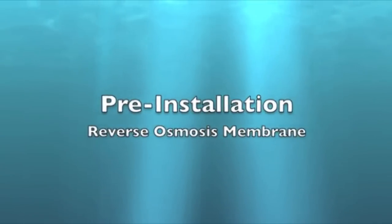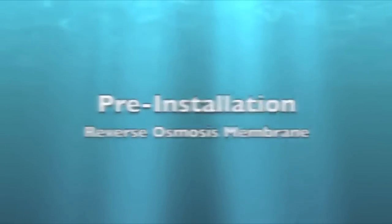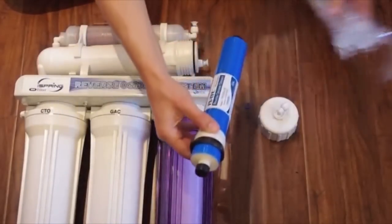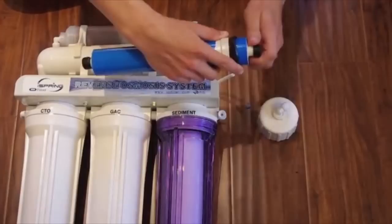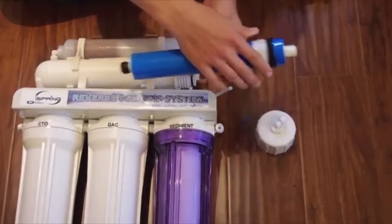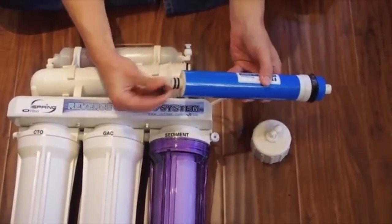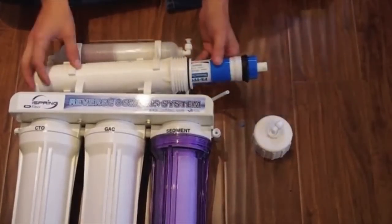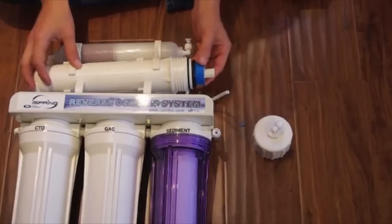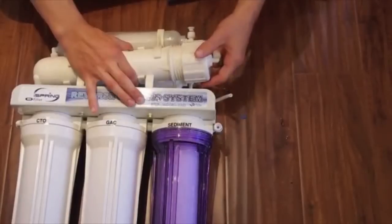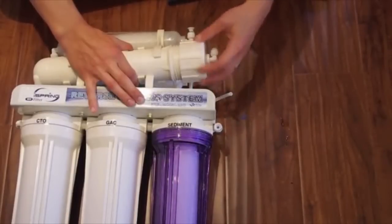Install the membrane. Remove the membrane from the protective wrap. Remove the black caps from both ends of the membrane. Install the membrane into the housing. The end with the two black O-rings goes in first. Make sure the membrane is pressed firmly into the housing. Install the cap and tubing.